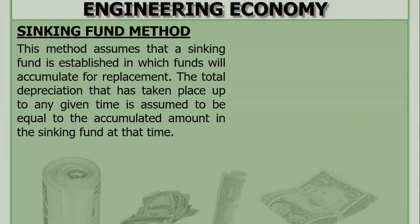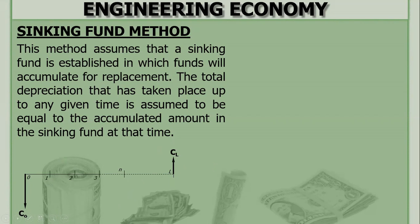So for replacement, you establish a sinking fund to be used for replacement. Suppose we have a cash flow diagram with years 1, 2, 3 and the life is L. Now, after the useful life, if you want to sell it, the value is the salvage value or scrap value. Suppose after the useful life you want to buy a new equipment — the same equipment.